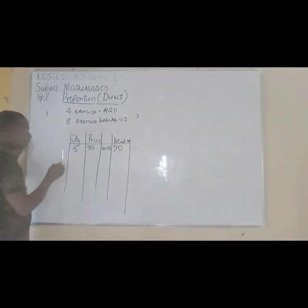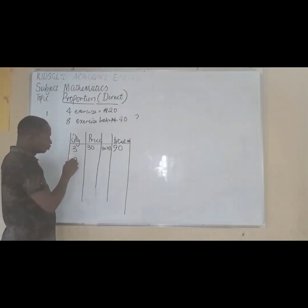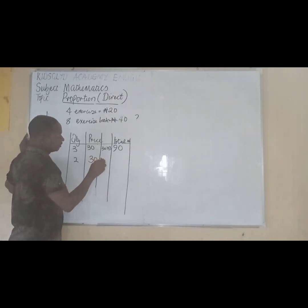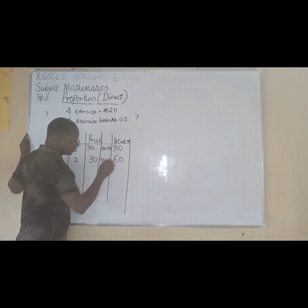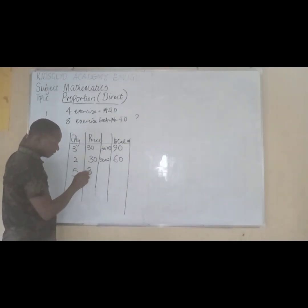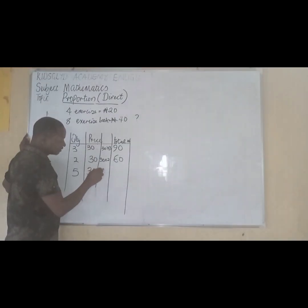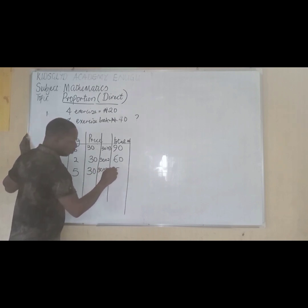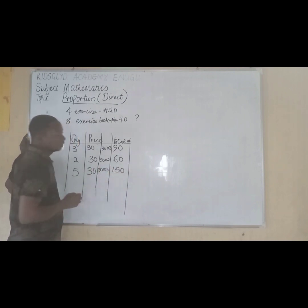But if I buy only 2, the price remains 30 Naira. I will then say 30 multiplied by 2, which gives 60 Naira. If I buy 5 at the same price of 30 Naira, that becomes 30 Naira times 5, which gives us 150 Naira.